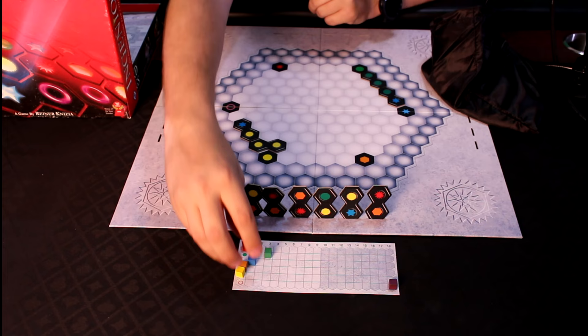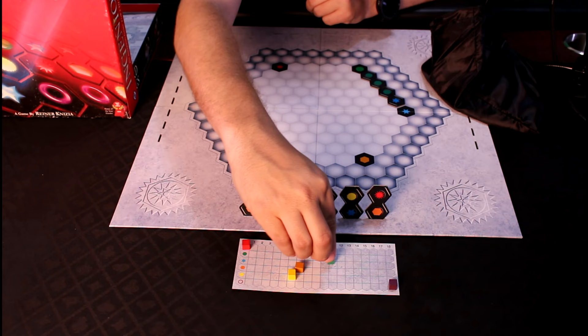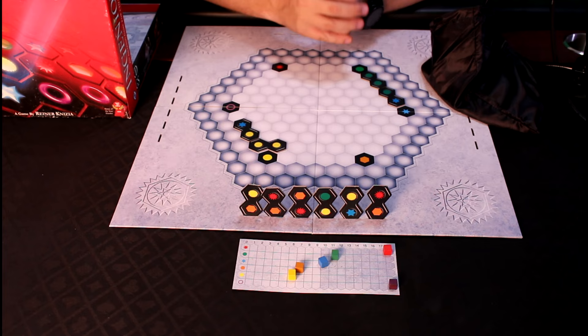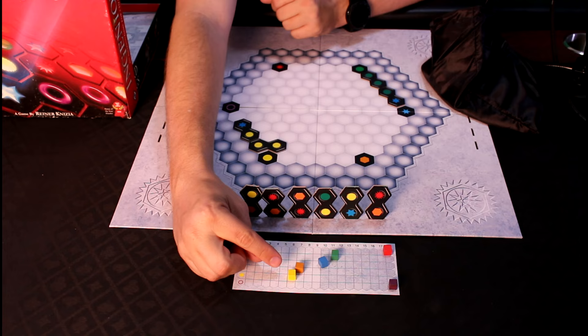The end game might look something like this, where players have moved their score markers along the board, and they will have different amounts of points. At the end of the game, your final score is equivalent to the number that you have scored the least of.